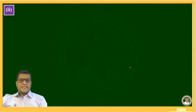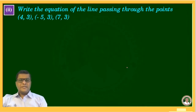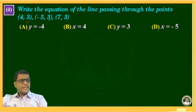Second question: write the equation of the line passing through the points (4, 3), (-5, 3), and (7, 3). Options are: y = -4, x = 4, y = 3, and x = -5. If you observe, the y-coordinate of each point is constant — that is 3. So y = 3 is the answer.